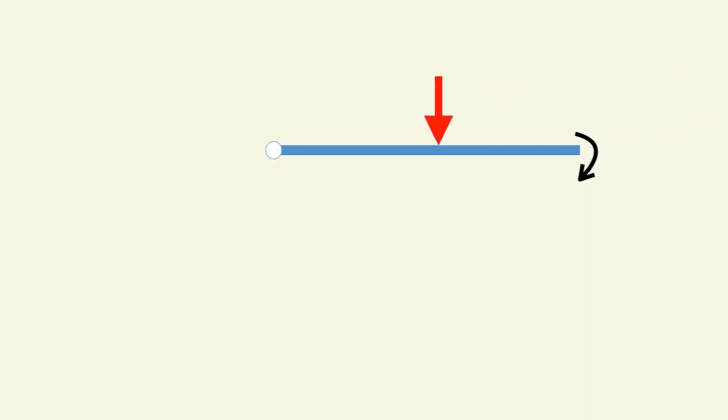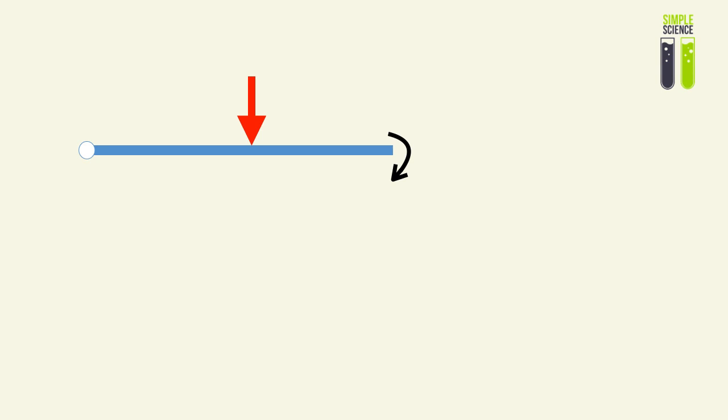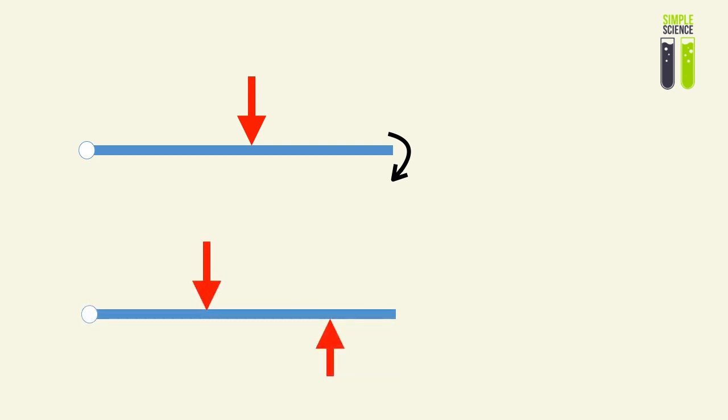Following up from our Moments of a Force video, we know that when a force acts at a distance from a pivot, then there is going to be a rotational effect, or a turning effect. But what if we were to counterbalance this turning effect with another force, which produces an anti-clockwise moment to counterbalance its clockwise moment, and therefore produces no net moment, and we attain a state of rotational equilibrium.